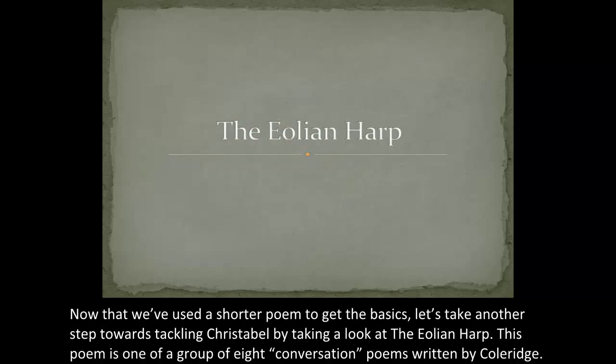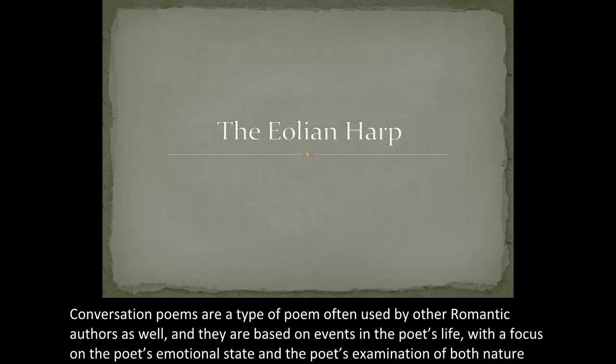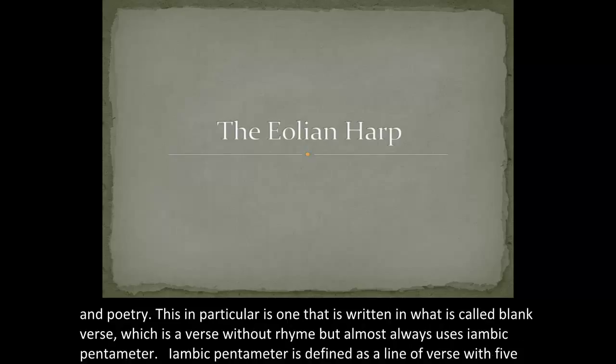Now that we've used a shorter poem to get the basics, let's take another step towards tackling Christabel by looking at the Aeolian Harp. This poem is one of a group of eight conversation poems written by Coleridge. Conversation poems are a type of poem often used by other Romantic authors as well, based on events in the poet's life, with a focus on the poet's emotional state and examination of both nature and poetry. This particular poem is written in blank verse, which is verse without rhyme, but almost always uses iambic pentameter.